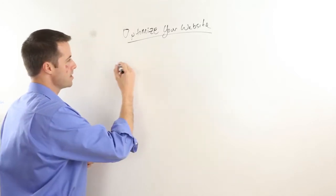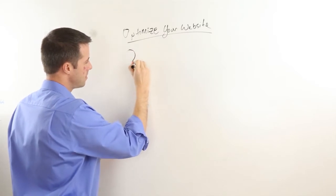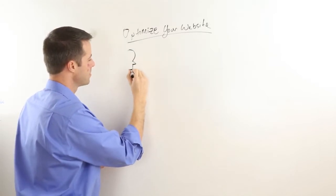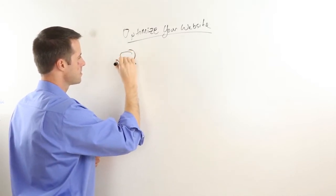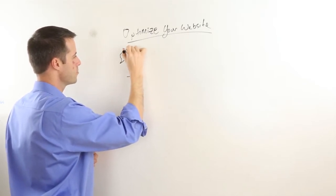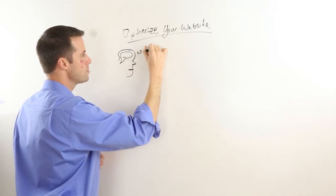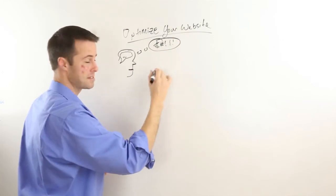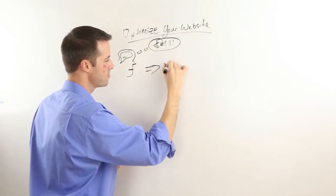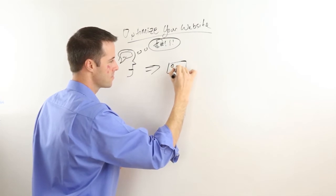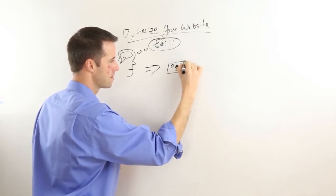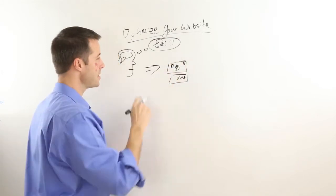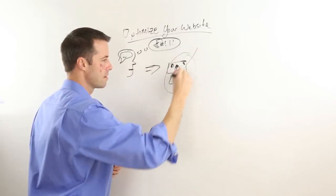There's a concept I want to introduce to you. You've got your average person here — that's their brain. The confused brain does not buy. We've got a dollar bill, a Visa card — this represents them renting a space. If they're confused, this doesn't happen.